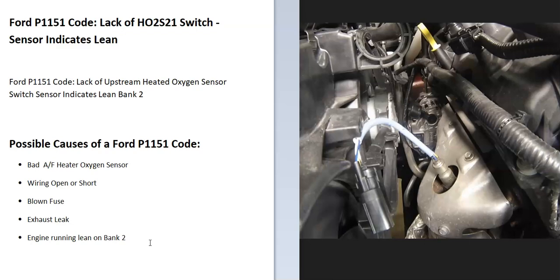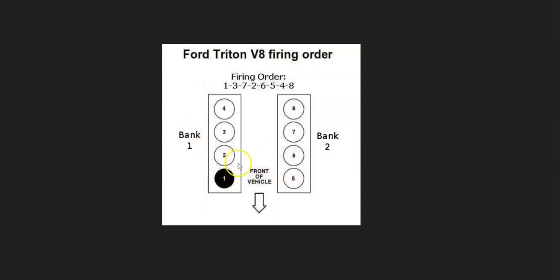A V6 or V8 engine is going to have two banks. The number one cylinder is always bank one and the opposite of that is bank two. A four cylinder wouldn't matter, it only has one bank. Bank two is the side of the engine that the onboard computer's seeing a problem with.